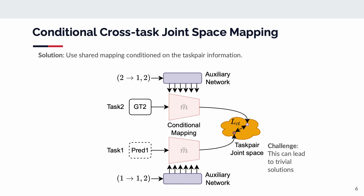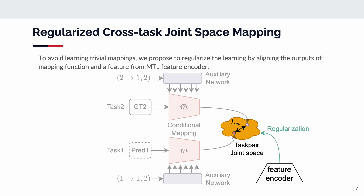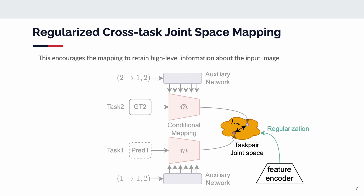However, the learning of the mappings can still lead to trivial solutions. For example, the outputs of mappings can be all zeros, and the cross-task consistency loss would be zero. To prevent this trivial solution, we propose to regulate the learning of mappings by aligning the outputs of mappings with a feature from the multi-task learning model's feature encoder. This encourages the mapping to retain high-level information about the input image.